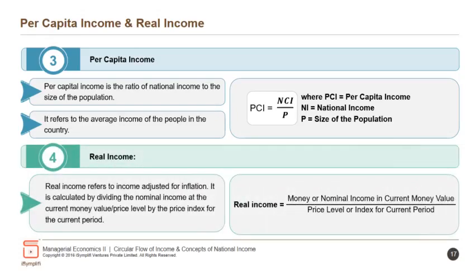Real income refers to income adjusted for inflation. It is calculated by dividing the nominal income at the current money value or price level by the price index for the current period.